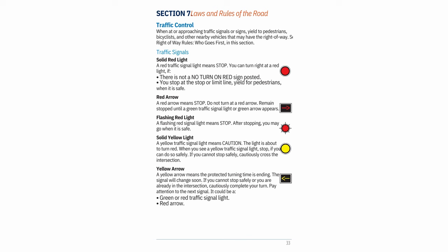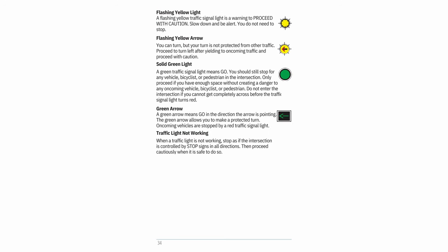Red arrow — means stop; do not turn at a red arrow; remain stopped until a green light or green arrow appears. Flashing red light — means stop; after stopping, you may go when it is safe. Solid yellow light — means caution; the light is about to turn red; stop if you can do so safely; if you cannot stop safely, cautiously cross the intersection. Yellow arrow — the protected turning time is ending; if you cannot stop safely or are already in the intersection, cautiously complete your turn; pay attention to the next signal. Flashing yellow light — proceed with caution; slow down and be alert; you do not need to stop.